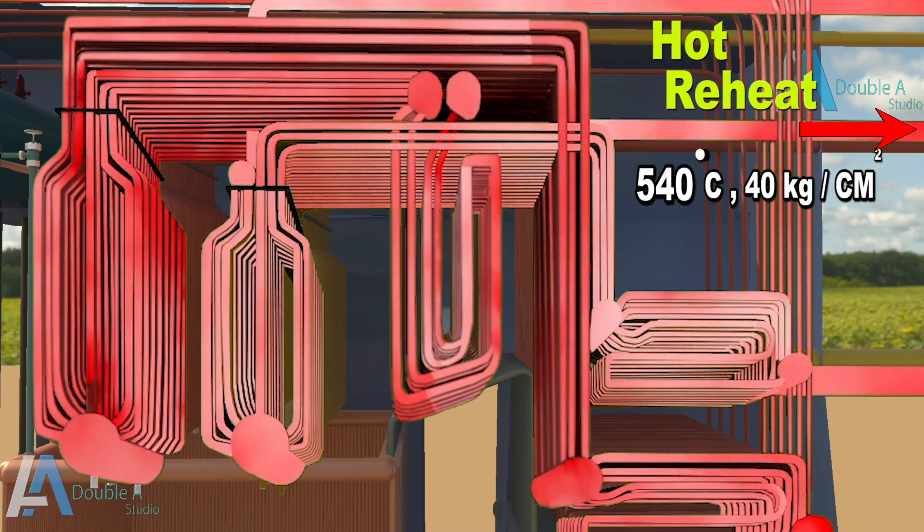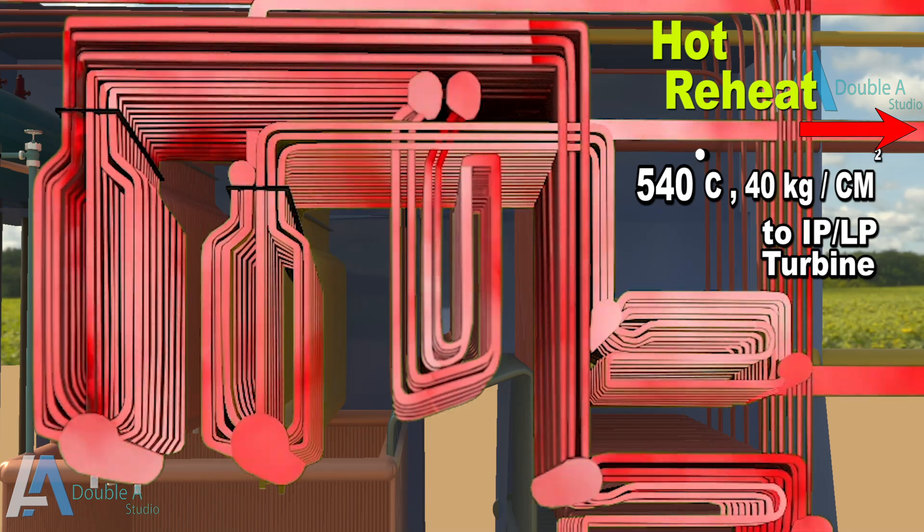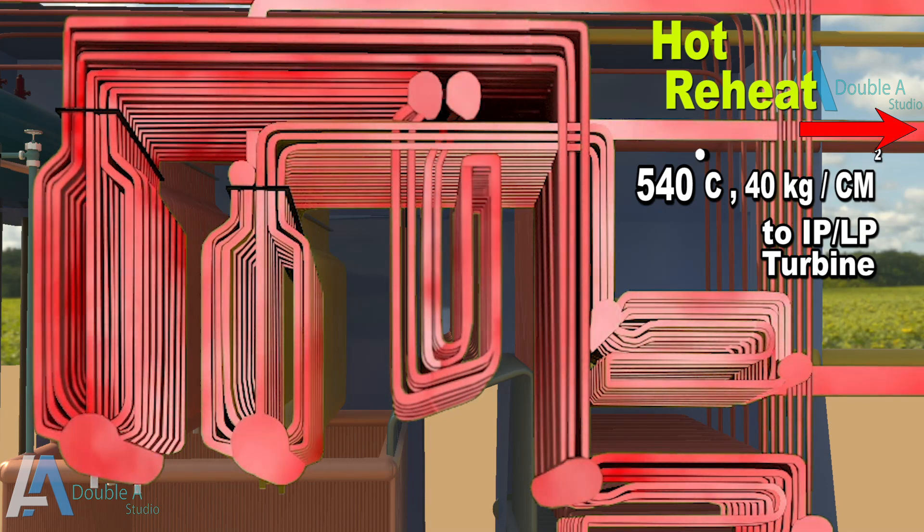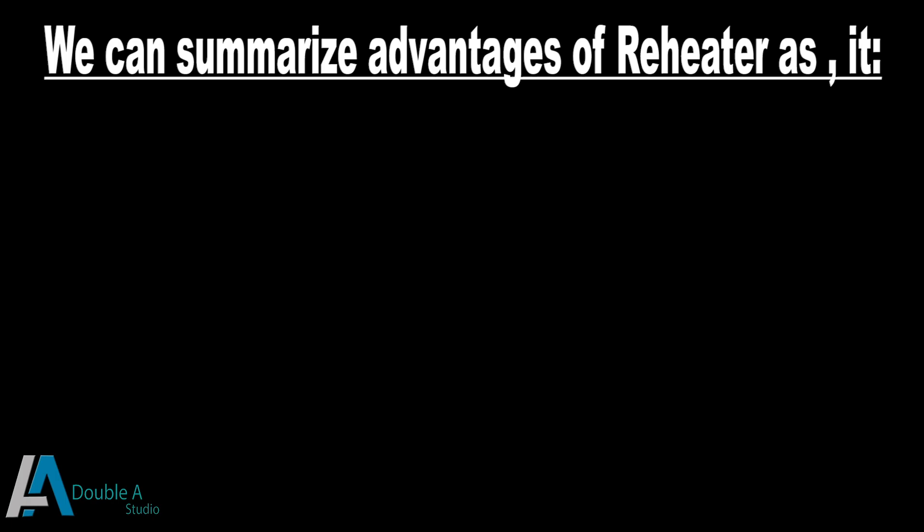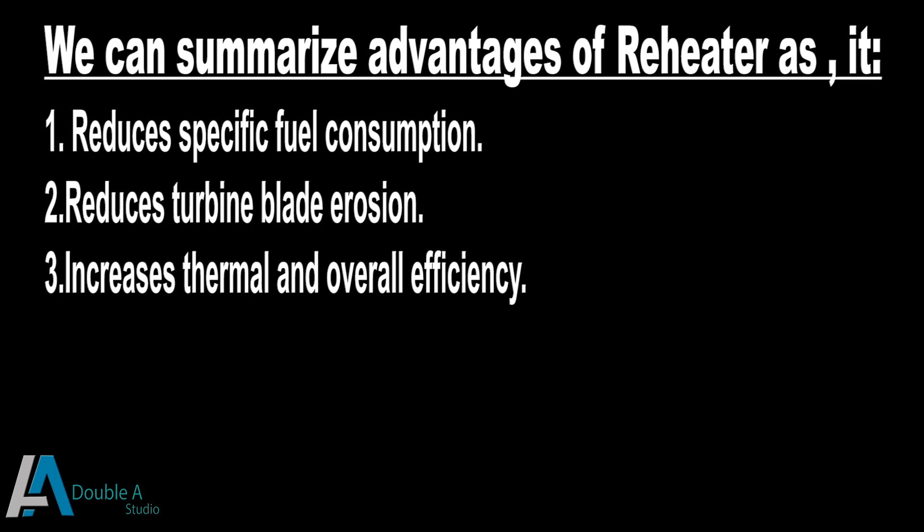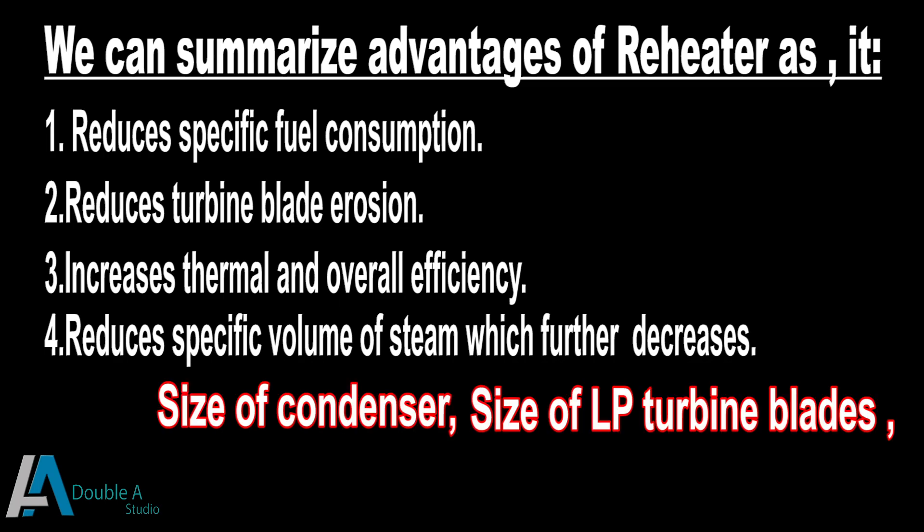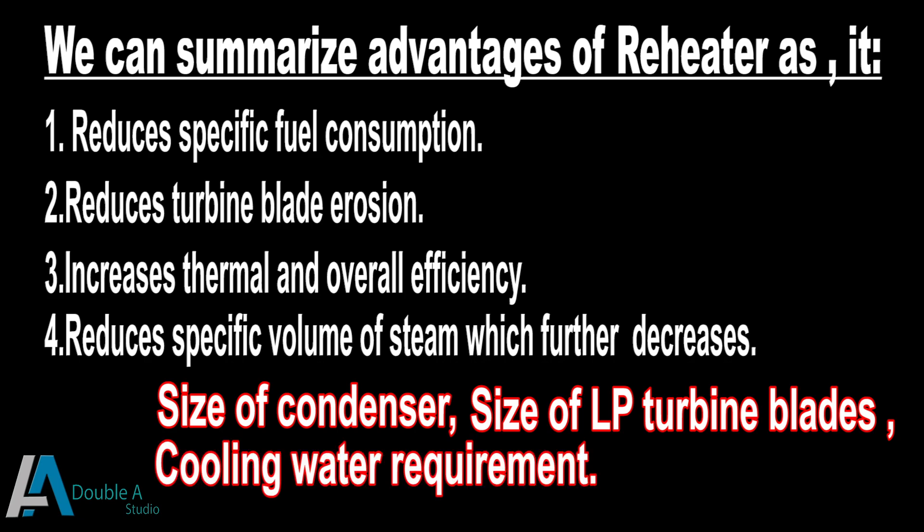From here, hot reheat is sent to IP-LP turbine for further expansion and work. We can summarize advantages of reheat as it reduces specific fuel consumption, it reduces turbine blade erosion, it increases thermal and overall efficiency, it reduces specific volume of steam, which further decreases the size of condenser, the size of LP turbine blades, and also the cooling water requirement.